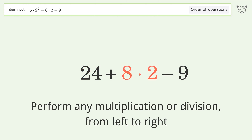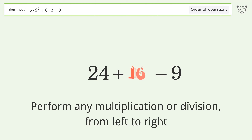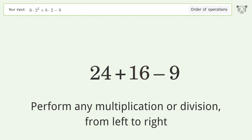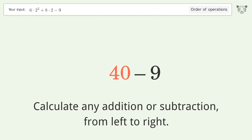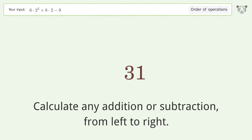8 times 2 equals 16. Then calculate any addition or subtraction from left to right: 24 plus 16 equals 40. 40 minus 9 equals 31. And so the final result is 31.